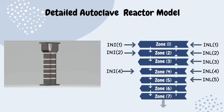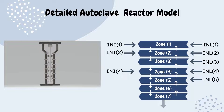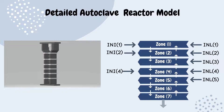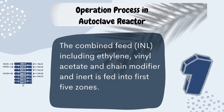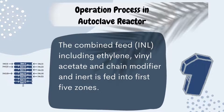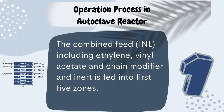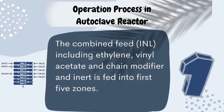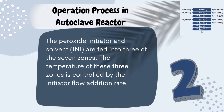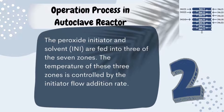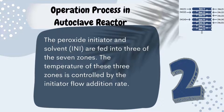The autoclave reactor is converted into a detailed autoclave reactor model where it is divided into seven zones. First, the combined feed — including ethylene, vinyl acetate, chain modifier, and inert — is fed into the first five zones. Second, the peroxide initiator and solvent are fed into three of the seven zones.